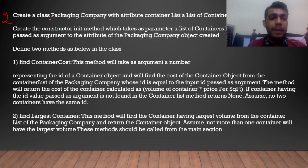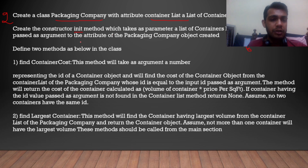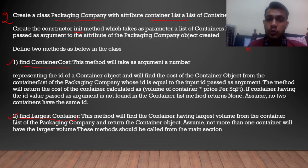Then we have to create the second class, PackagingCompany. What are the attributes? The attributes will be container list — a list of container objects. Create the constructor: we have to create an init method which takes self as the first parameter, and a list of container objects. The method will set the values. So there are two methods we have to define: findContainerCost, and findLargestContainer.